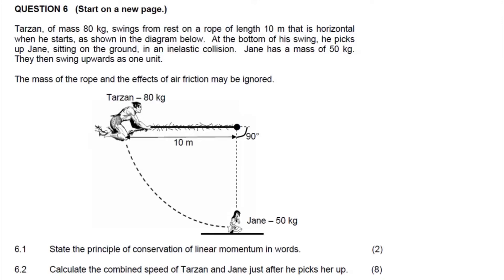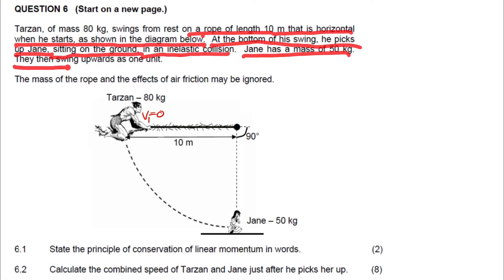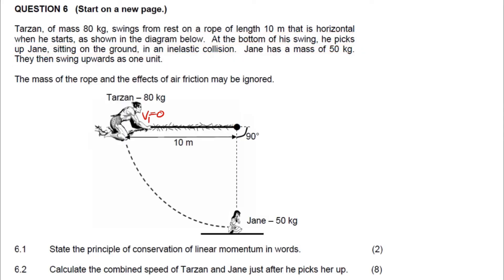Here's another energy and momentum question from the 2009 national DBE exam paper. Tarzan, of mass 80 kg, swings from rest on a rope of length 10 meters from a horizontal position. At the bottom of his swing, he picks up Jane, who is sitting on the ground, in an inelastic collision. Jane has a mass of 50 kg, and then they swing up as one unit.